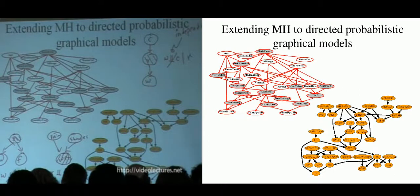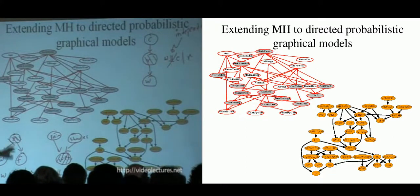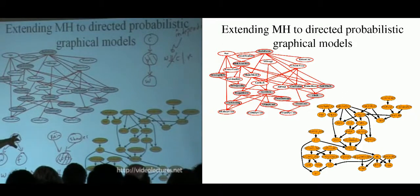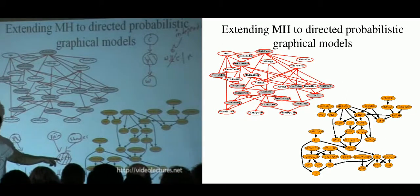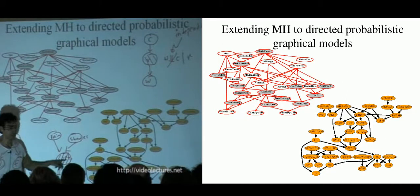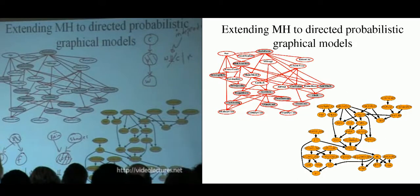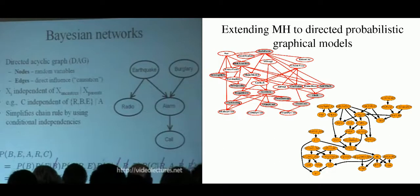One thing that matters is parents — the nodes on top. Parents are important, children are important, and the other child's parent is also important. When you put all this together, you get something called the Markov blanket.